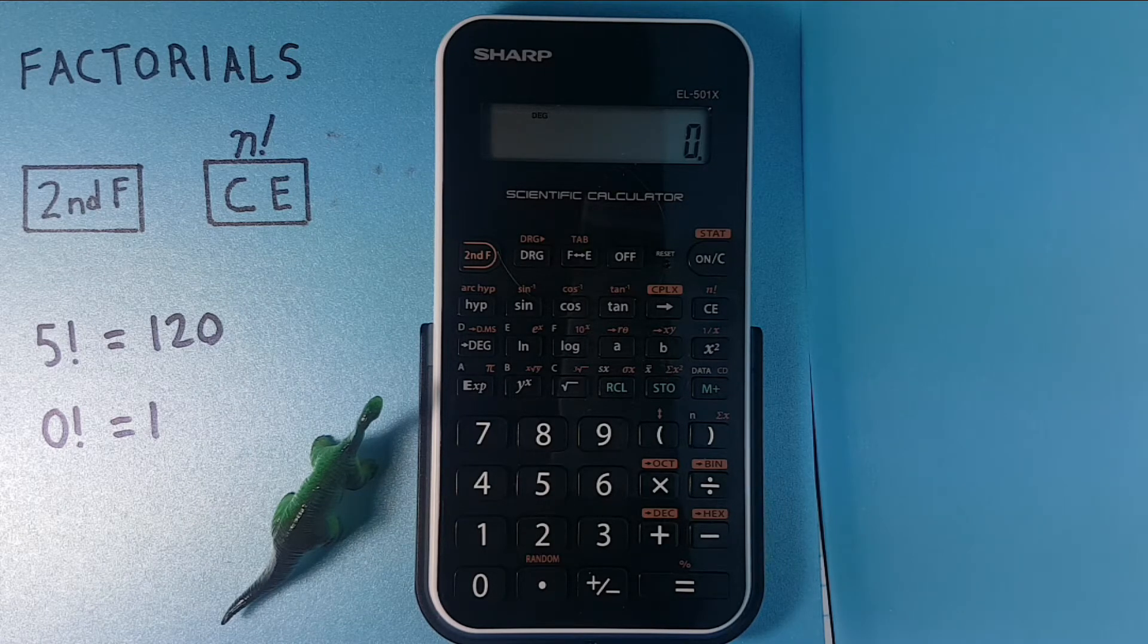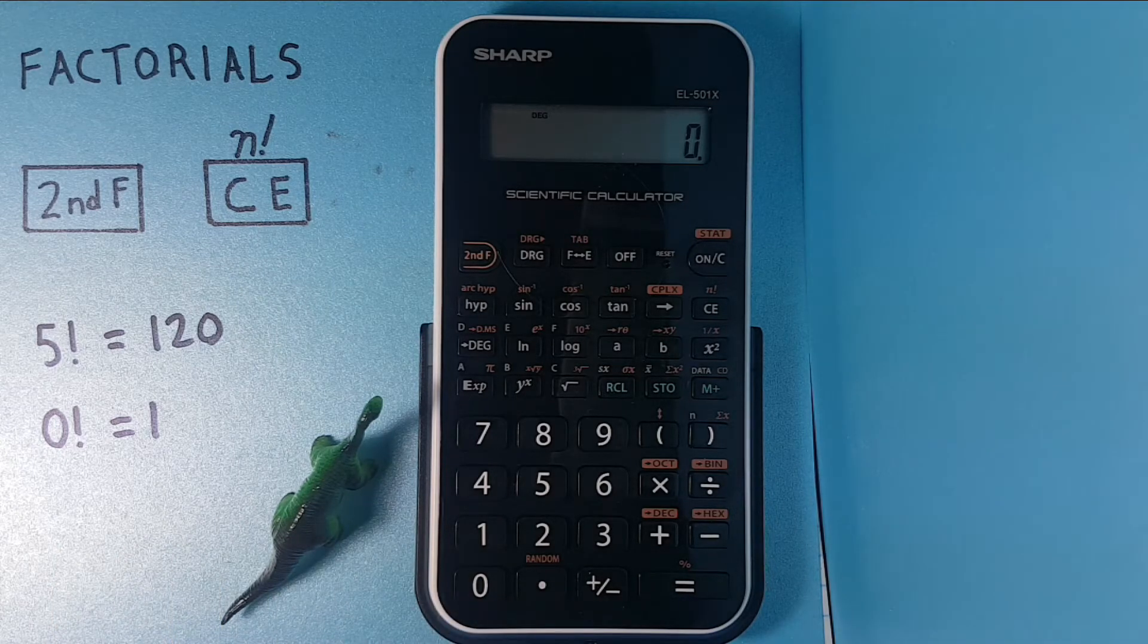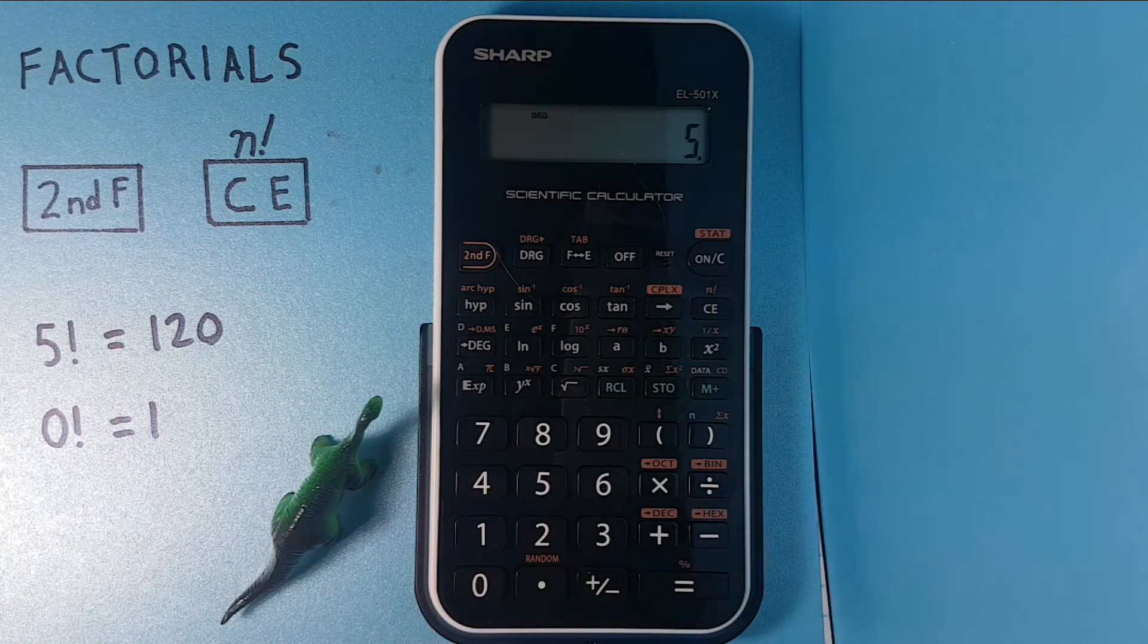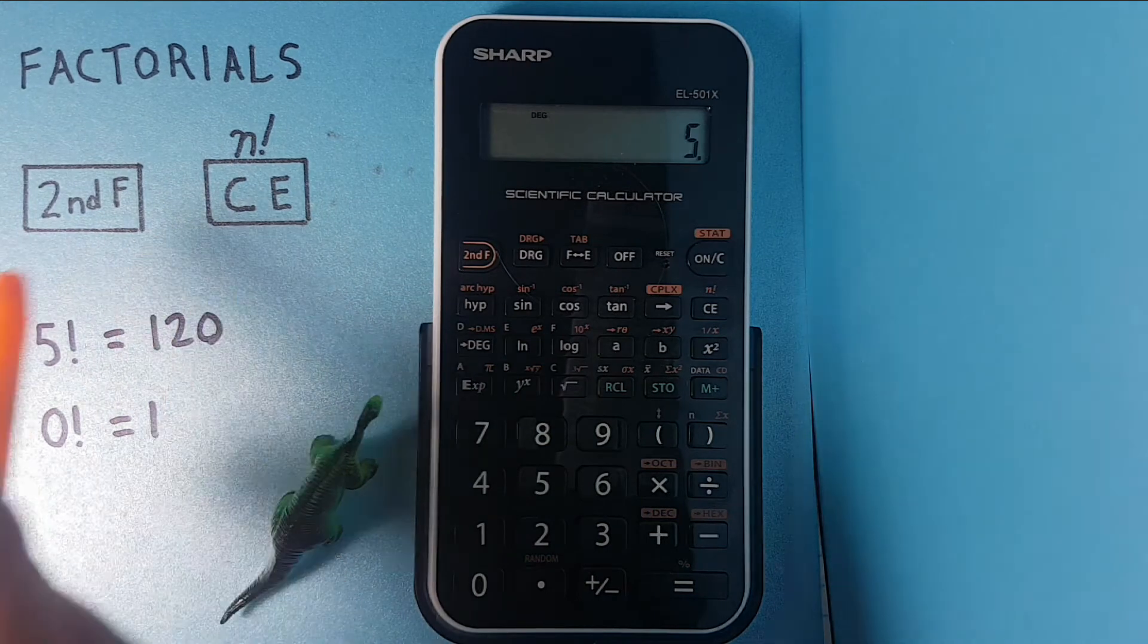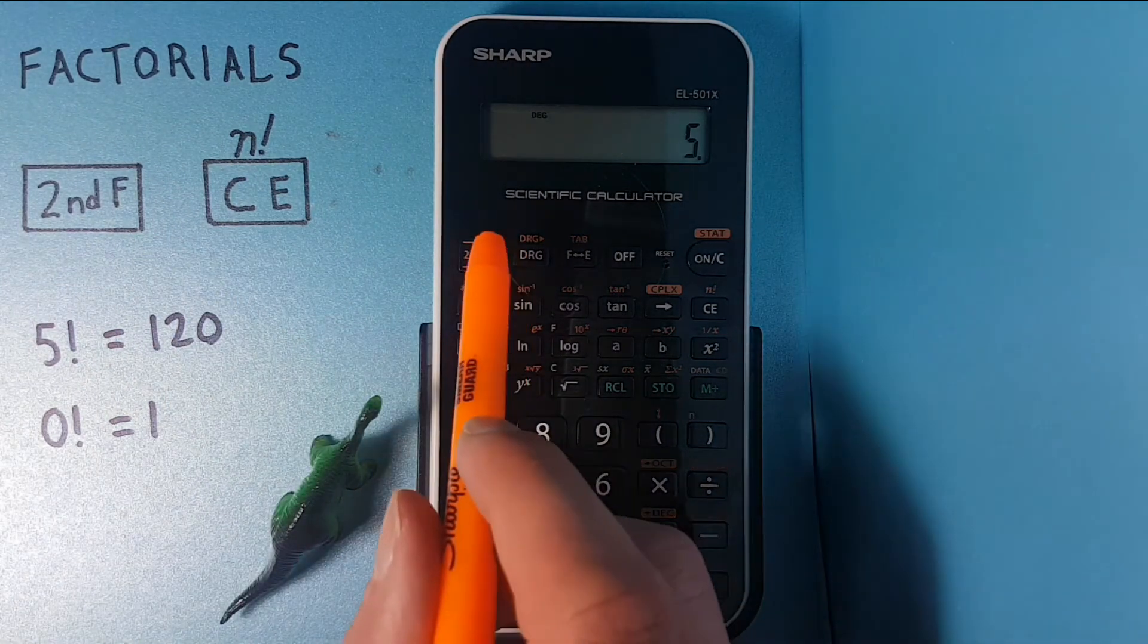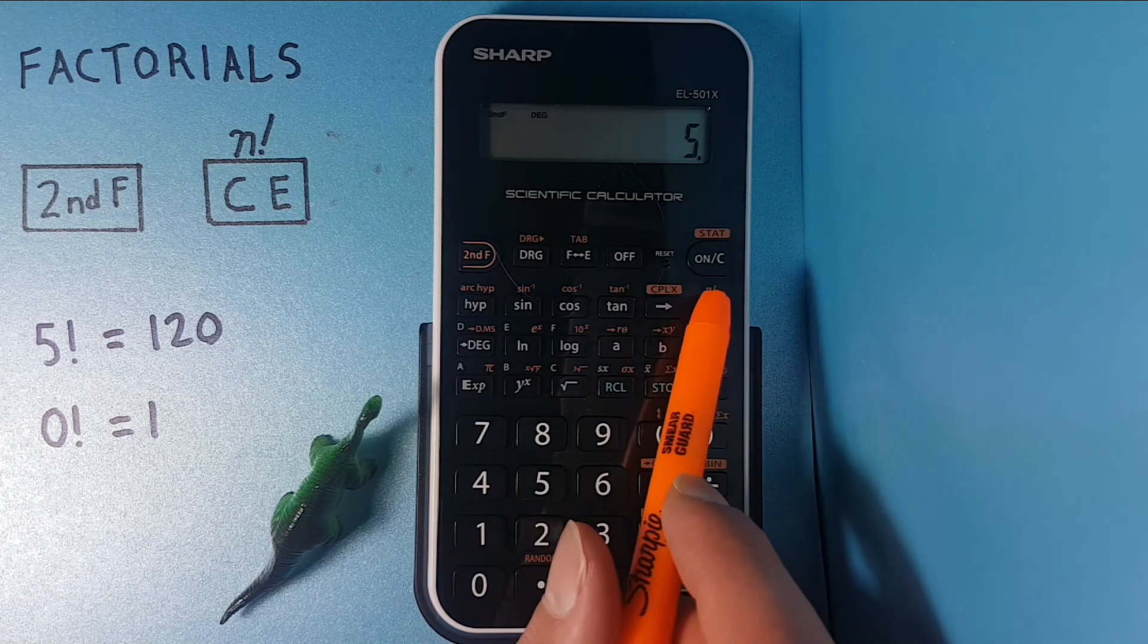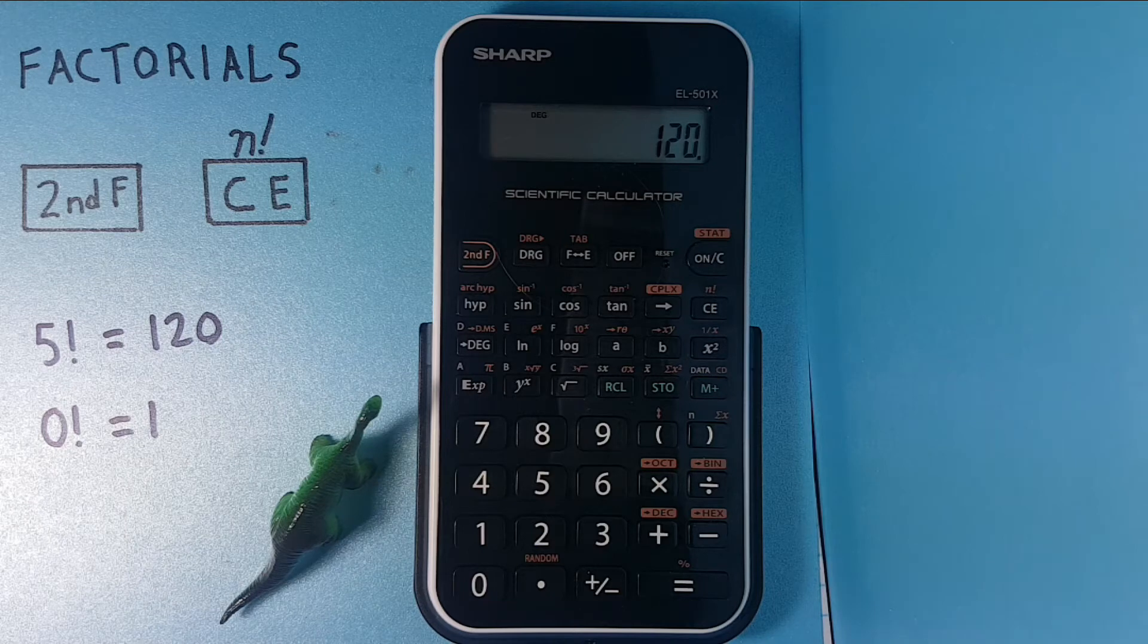This is a fairly simple procedure. To do factorial, we simply place the number on the screen. Let's do 5 factorial, so 5, and then we use the second function CE buttons. Second function and then the CE factorial button right here, and we get 120, which we know is correct.